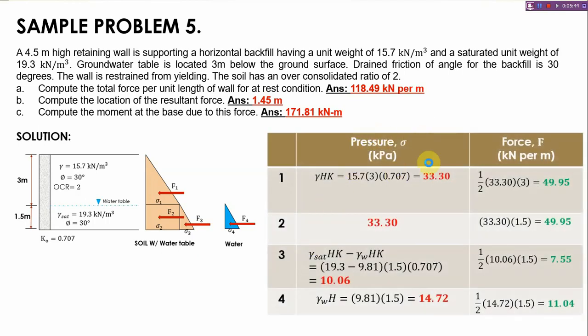I'll use tabular form for easier analysis. For our pressure sigma 1, for the first shape, it's just gamma h k. The gamma given is 15.7 times 3 times 0.707 which is 33.30. For the second, equal to this, it's 33.30. If you notice they're the same because they're at the same level, at the water table or at the bottom. The reason is because they have the same angle of internal friction.